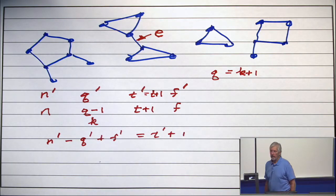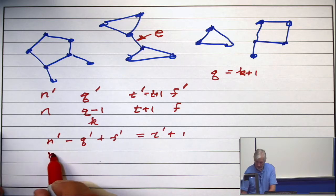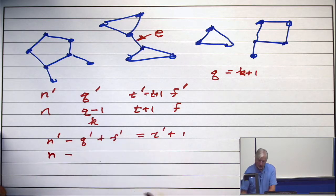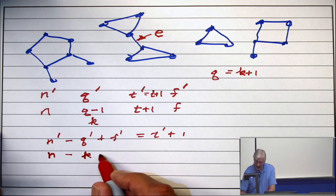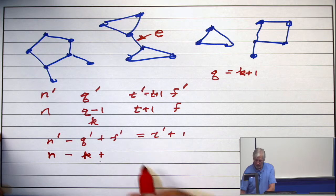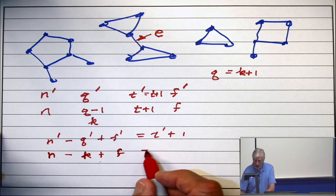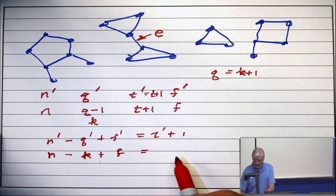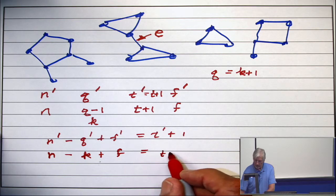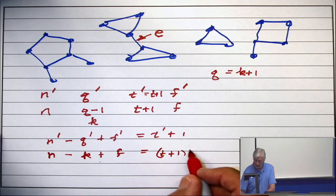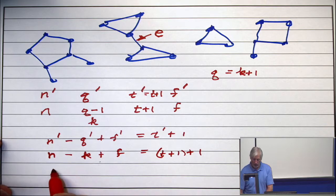All right, so now substitute. N prime is n. Take away your q prime, that's k. Add your f prime. Your f prime is the same as your f. And you get your modified t prime, which is t plus 1 plus 1. All right, and now what does that say?